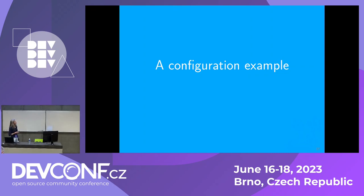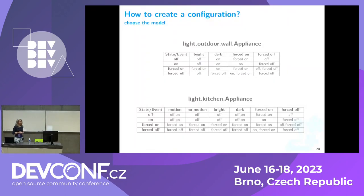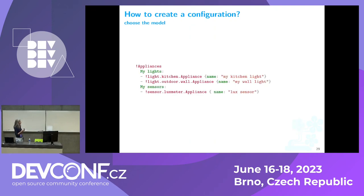Now we can go through an example of how to use this project. The first thing you need is to choose your automation, choose your model. For example, I have put here two models: the kitchen model we've already discussed, and another simple state machine I could use for an outdoor wall light. After you have chosen your model, you can put it down — you give it a name.